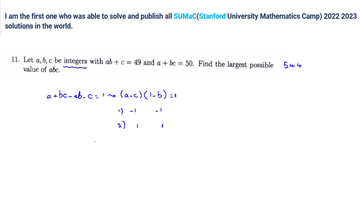We want to check both cases. In the first case, A minus C is negative 1, 1 minus B is negative 1. So in this case, B is 2 and C is A minus 1. If we replace it in the first one, A times B, which is 2A plus C, which is A minus 1, is 49. So 3A is 50, and it's not possible, right?